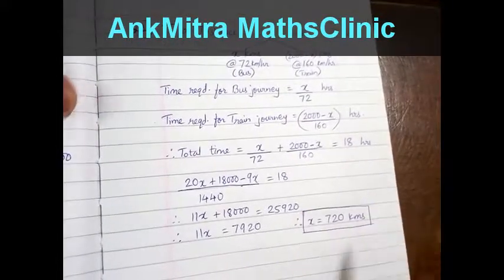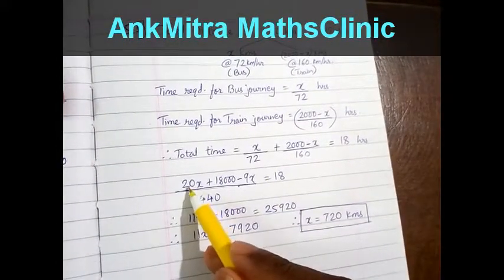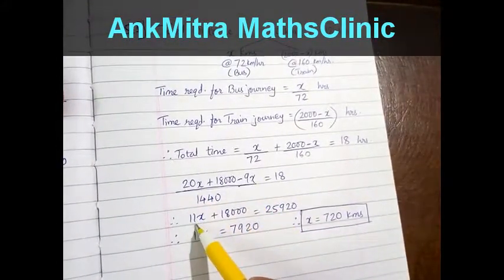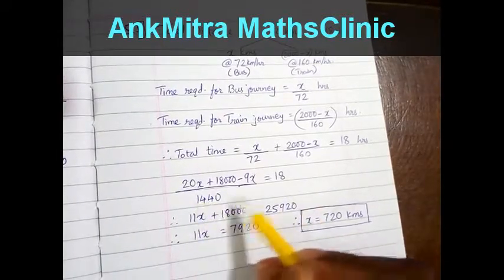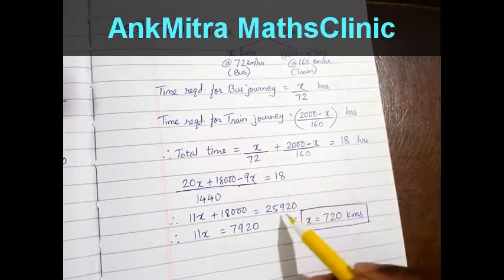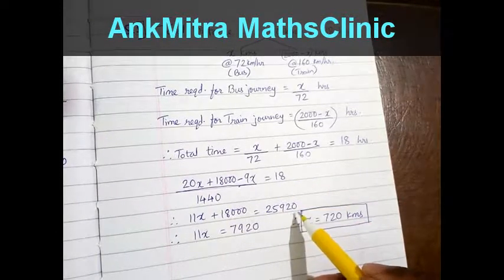The next step will be 20x minus 9x which is 11x plus 18000 equals 1440 multiplied by 18 which is 25920.